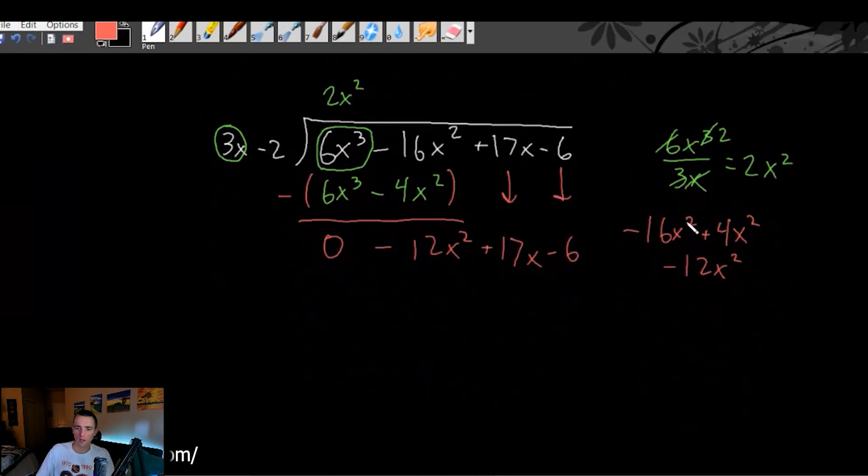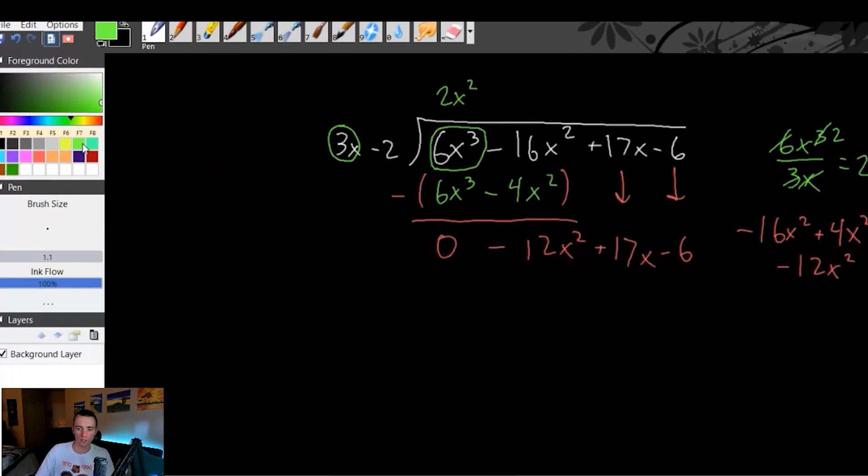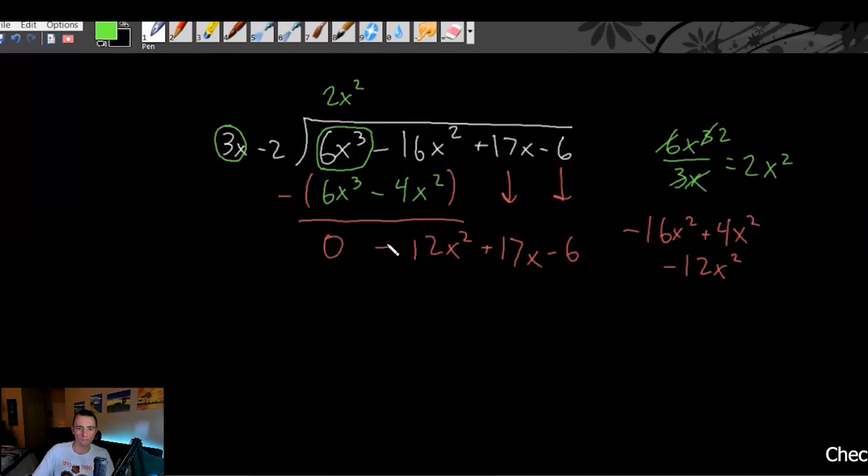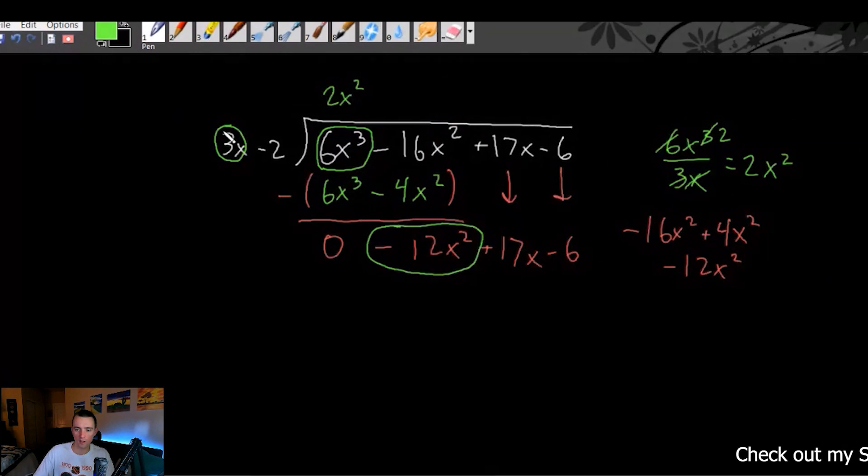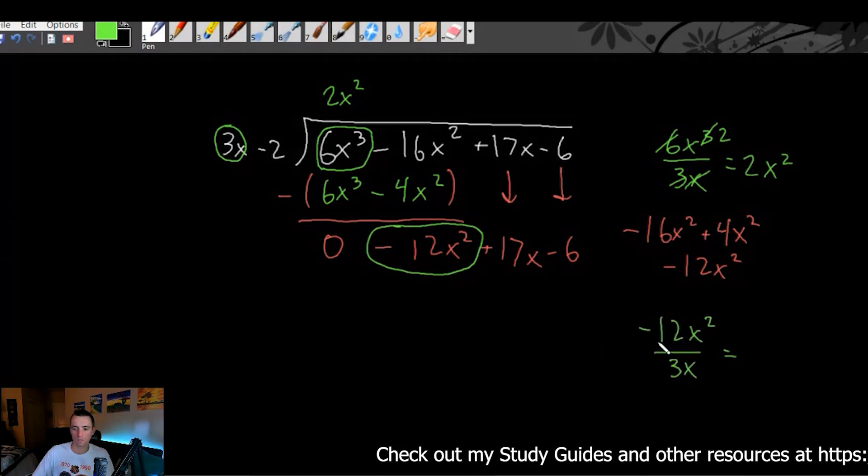So now we have this new polynomial. We're just going to look at the leading term, the highest power x term. So negative 12x and the highest power x term of this one. So if we do now negative 12x squared divided by 3x, what is that going to leave us with?